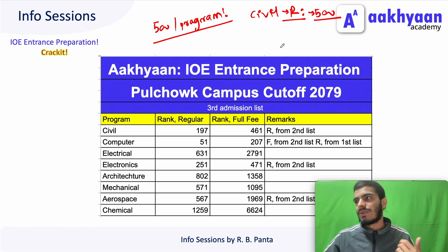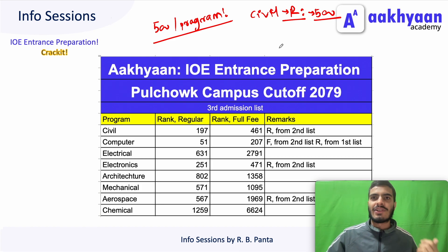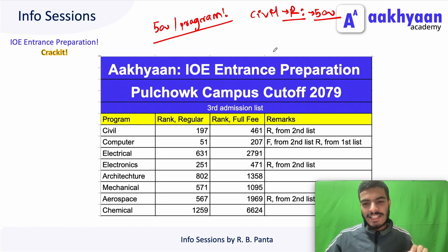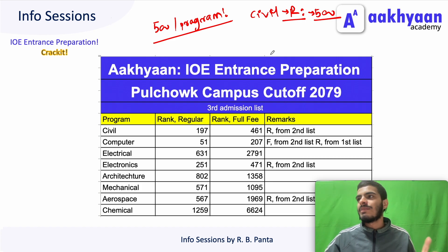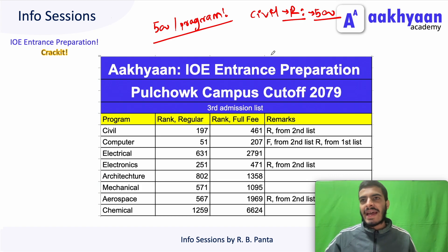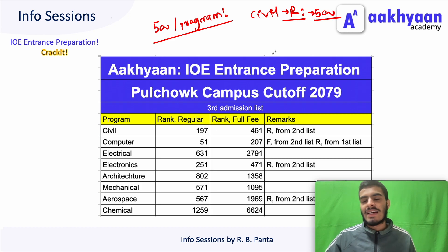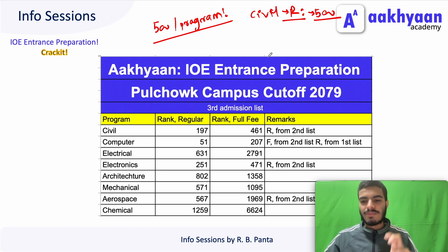The admission form is different for each campus. For example, Pulchowk campus has a different form, and the respective bank is given for each campus. Similarly, you have to go to the campus bank — NACA bank — and fill forms for different colleges.